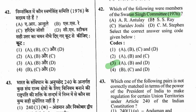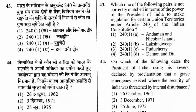Question 43: Which is not correctly matched in terms of the President's power to make regulations for certain Union Territories under Article 240? The right option is option 3. Article 240(1)(e) for Puducherry is not correctly matched. The rest are correctly matched: Article 240(1)(a) for Andaman and Nicobar Islands, 240(1)(b) for Lakshadweep, and 240(1)(d) for Daman and Diu.